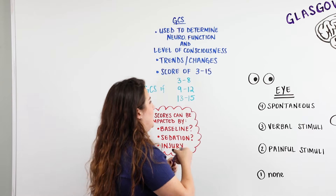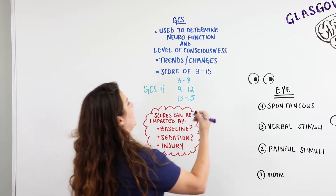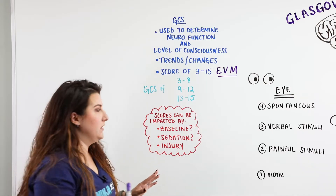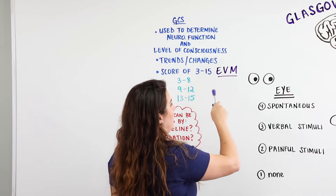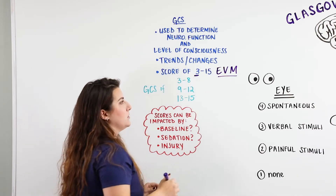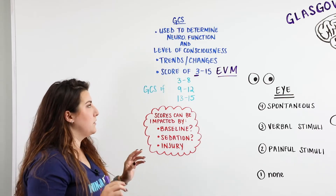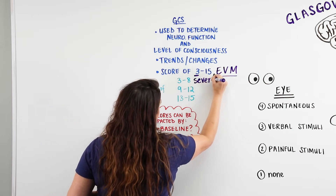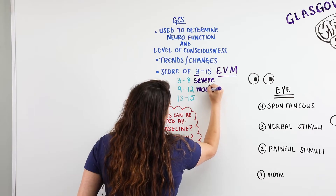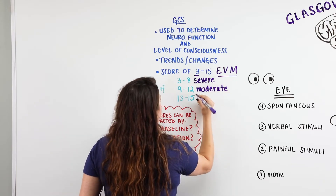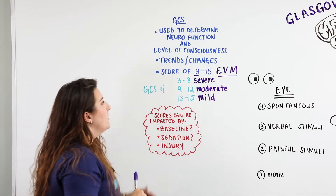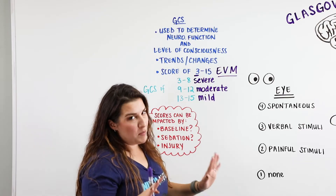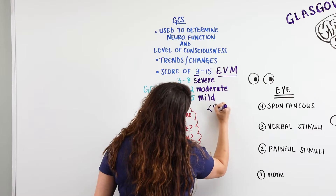The GCS score ranges from 3 to 15, covering eye, verbal, and motor assessment. A score of 1 in each category gives the lowest score of 3. The scale is categorized for traumatic brain injury: a GCS of 3 to 8 is considered severe, 9 to 12 is moderate, and 13 to 15 is mild. There's a saying in the medical field: when the GCS is less than 8, you want to intubate.